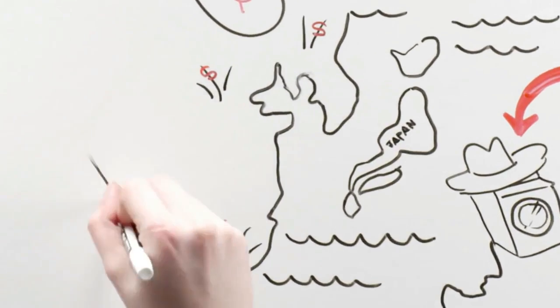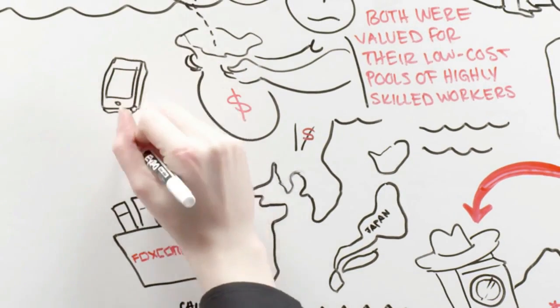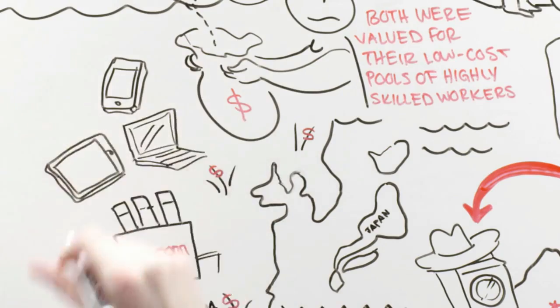A case in point is Apple's relationship with China-based Foxconn. Foxconn's enormous capacity to mass-produce the iPhone and other Apple products was an advantage.